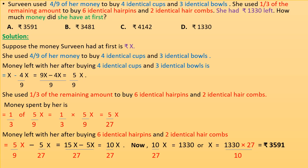She used 1/3 of the remaining amount 5x/9 to buy hair pins and hair combs, so money spent is 1/3 × 5x/9 = 5x/27. Money left after this purchase is 5x/9 − 5x/27 = 15x/27 − 5x/27 = 10x/27. Since 10x/27 = 1330, we get x = 1330 × 27/10 = rupees 3591. The correct option is A.